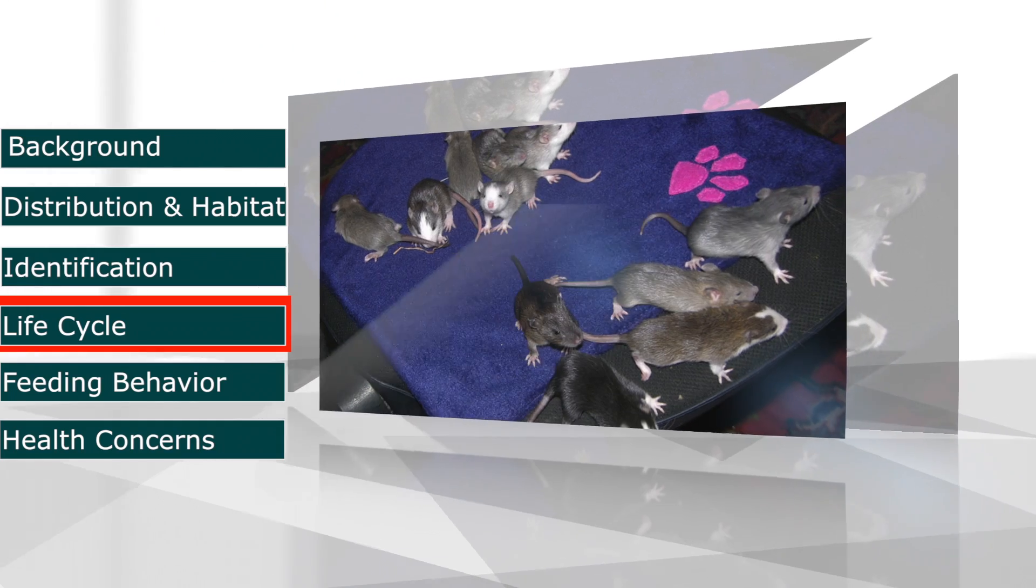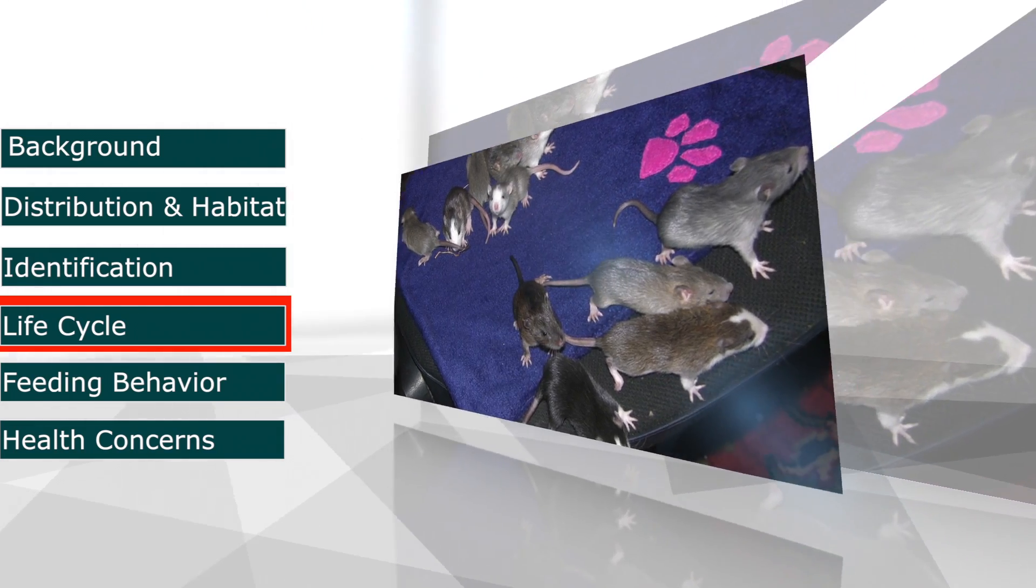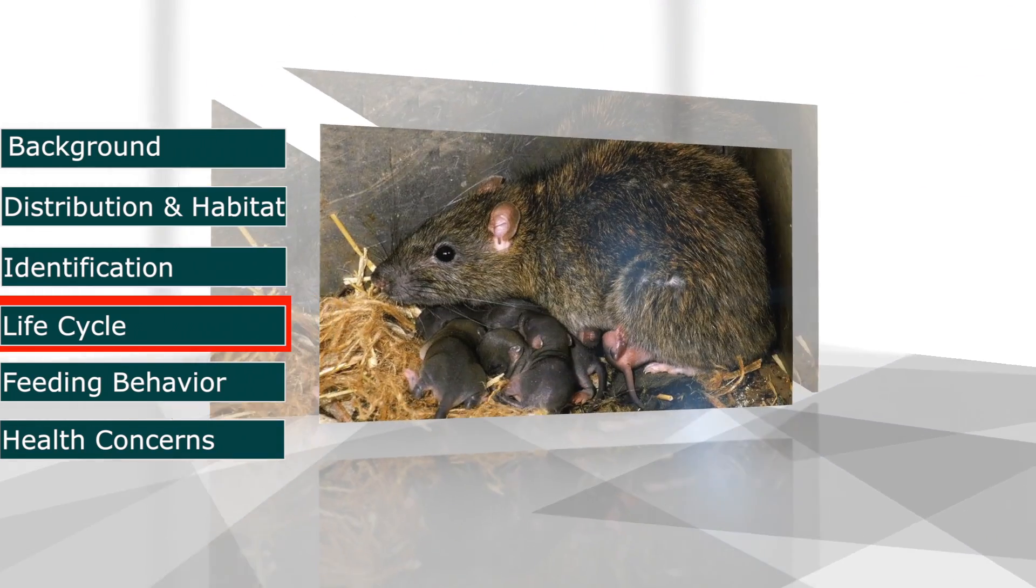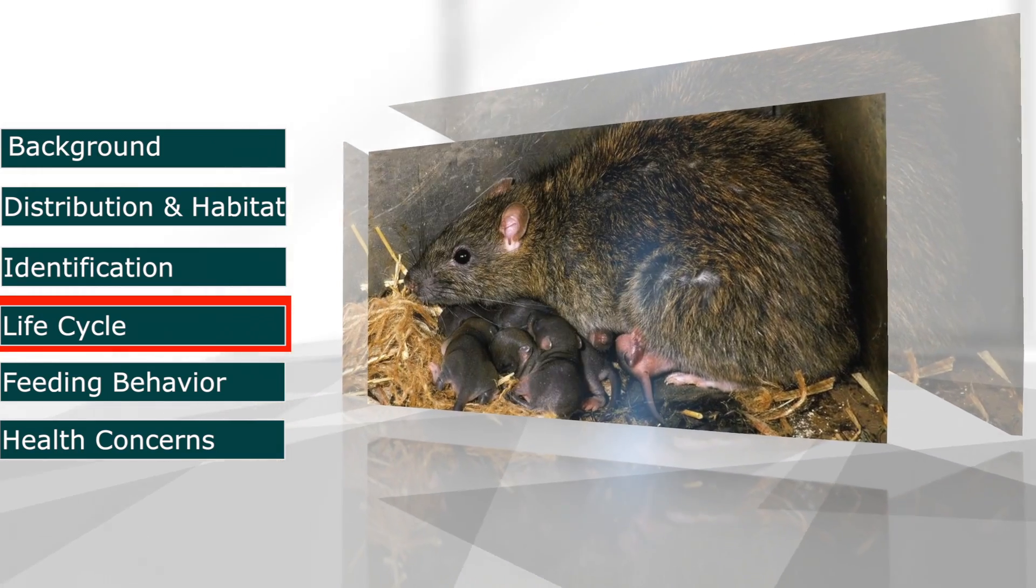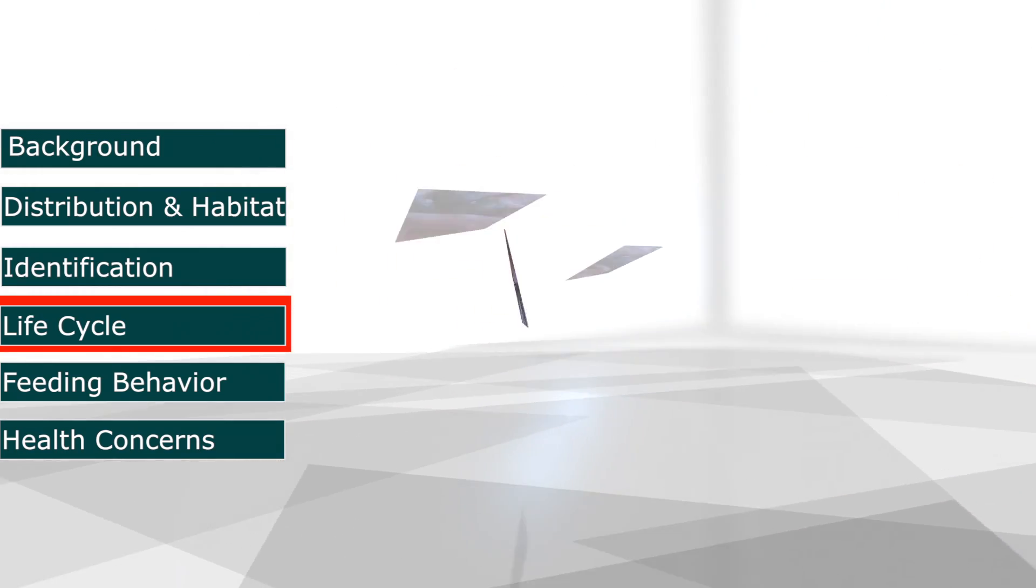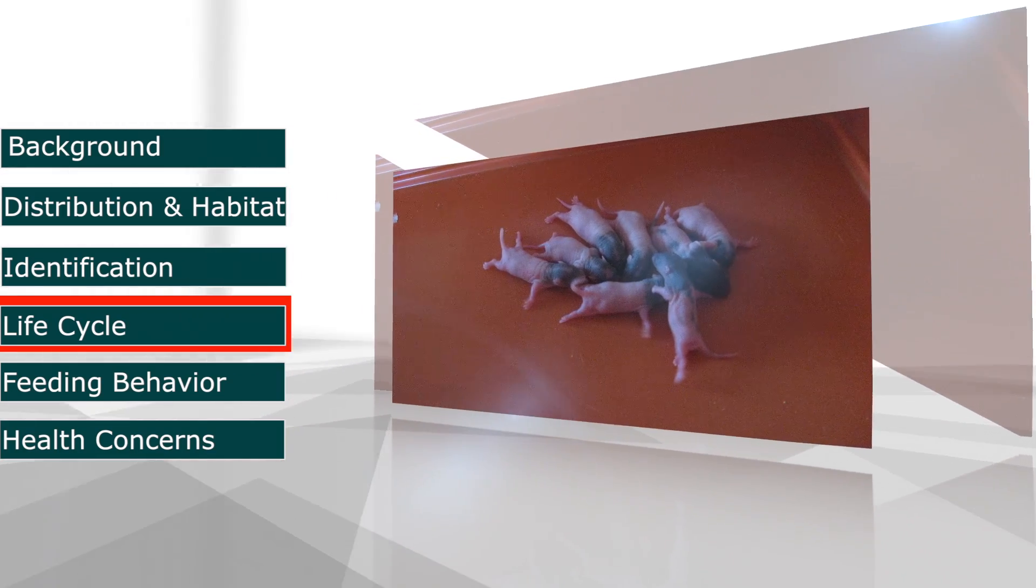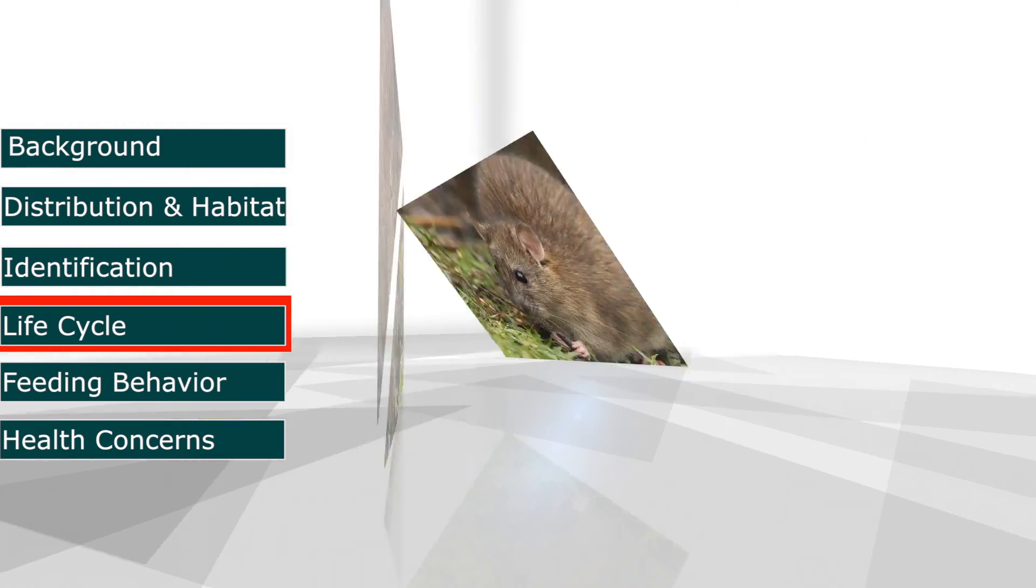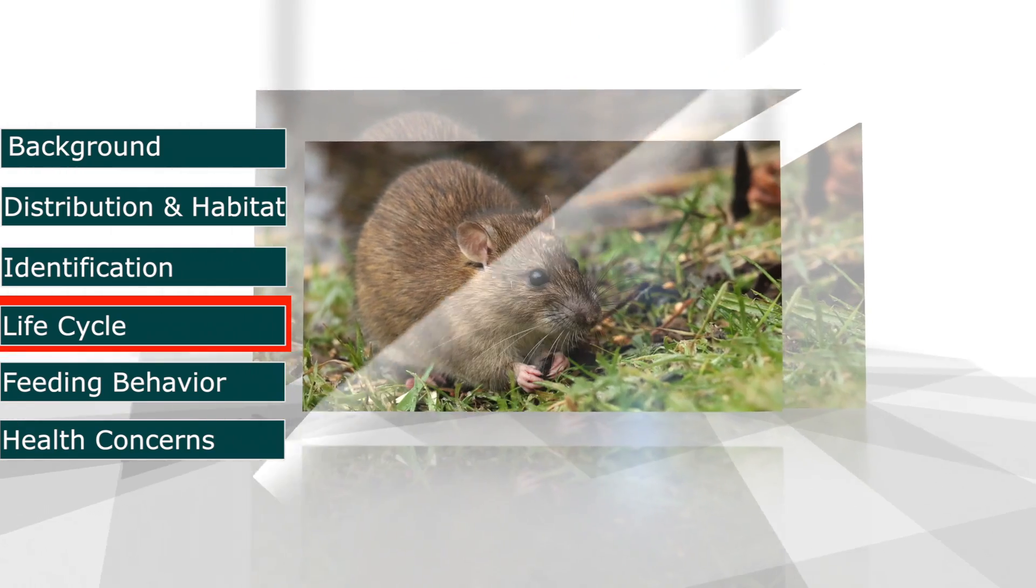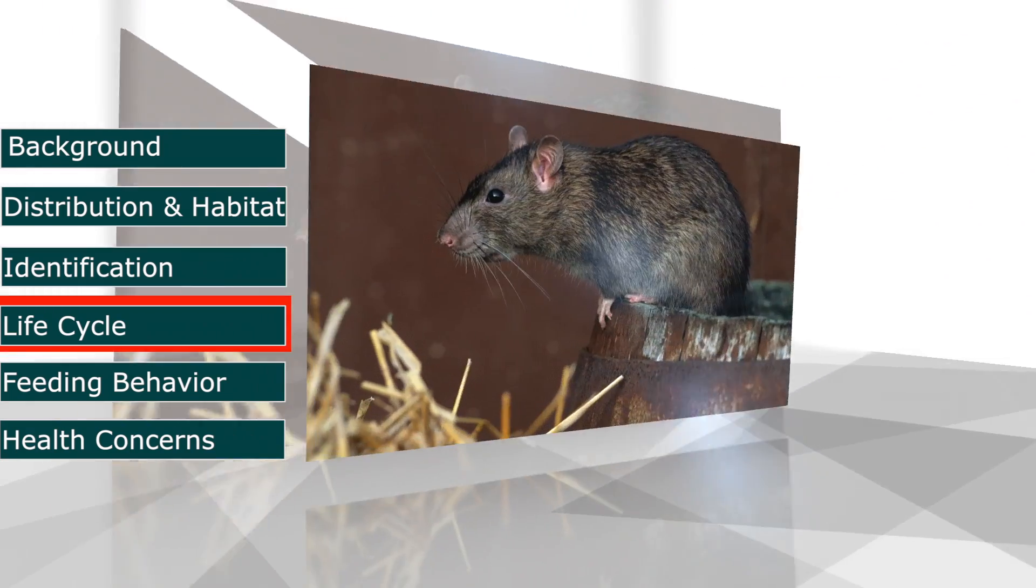Norway Rats become sexually mature at 3 to 5 months, and females go into heat every 4 to 5 days. The gestation period is 21 days, after which females birth about a dozen young. Females can produce 4 to 7 litters per year, and adults usually live 9 to 12 months, although they can live up to 3 years.